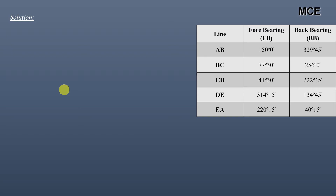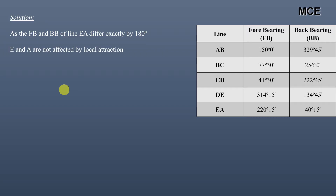Coming back to our question: we have been given the fore and back bearings of these lines. First we will find the line whose fore bearing and back bearing differ exactly by 180 degrees. If there is such a line present in the traverse, it means that the bearings taken from that station are correct. We can see in our question that the fore bearing and back bearing of line EA differ exactly by 180 degrees. This means that station E and station A are not affected by local attraction, so bearings taken from station E and station A are correct.